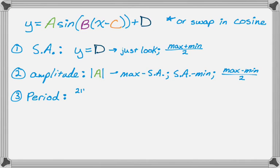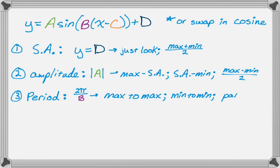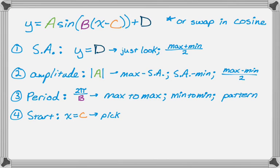The third part is the period, which is 2π divided by b. We find the period from the graph and use 2π over b to solve for b. I usually go from maximum to maximum, minimum to minimum, or just count the pattern. I rarely go intercept to intercept because you have to count two — there's an extra one in between. The last thing is a starting point, which is x equals c. You'll pick that, or hopefully just start with 0.